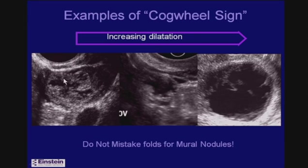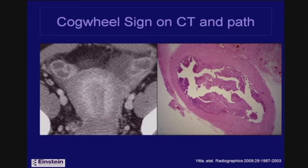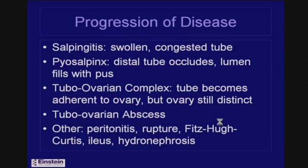These are examples of the cogwheel sign in three different patients with increasing degrees of dilatation — a little fluid with thickened endosalpingeal folds, then more fluid, then even more dilatation but still thickened folds. Do not mistake these folds for mural nodules and be concerned about an epithelial neoplasm. The cogwheel sign can also be seen on CT. A cross-section of the tube in a pathology specimen shows the dilated lumen with thickened endosalpingeal folds.